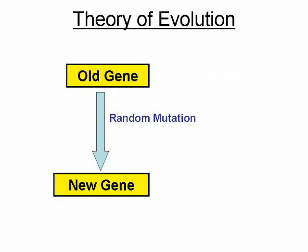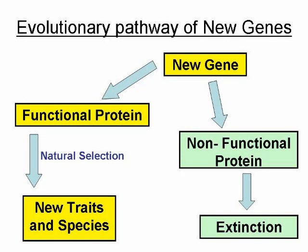The basic theory of evolution is that genes undergo random changes called mutations that produce new and different genes. These new, different genes may produce functional proteins that undergo natural selection to give the organism a distinct survival advantage in its particular environment. The combination of these changes eventually, over time, lead to the development of new species.